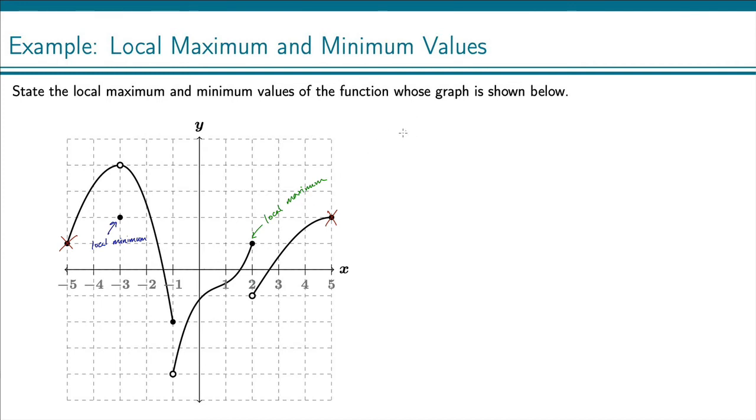So we can state this: we have a local minimum value over this point right here, and we're looking at the y value when we talk about local maximum and minimum values. So that local minimum value is here at positive 2. So it's 2, and it occurs at x equals, and that's down here of course, at negative 3.